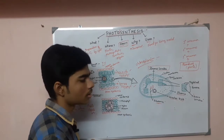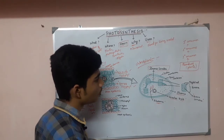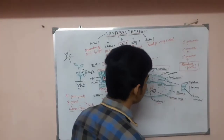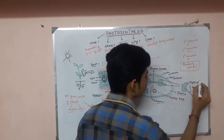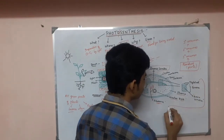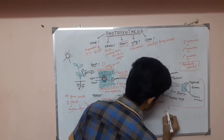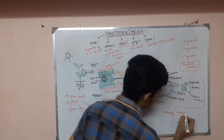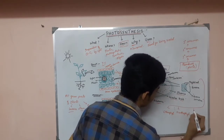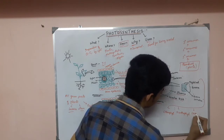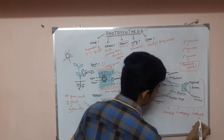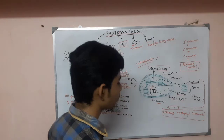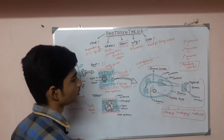We have seen that photosynthesis occurs in the chloroplast. The more important compound involved in photosynthesis is chlorophyll, which is present inside the thylakoid membrane. The thylakoid membrane contains chlorophyll, xanthophyll, and carotenoids. These are the primary photosynthetic pigments which are involved in the photosynthesis process.